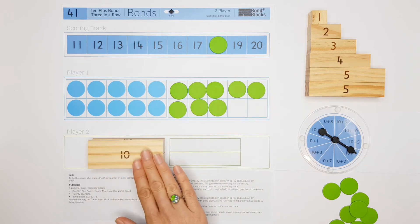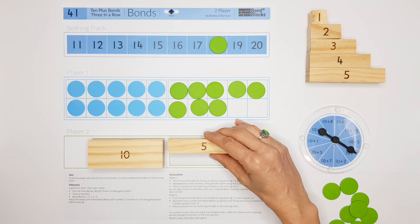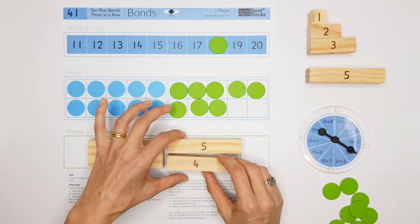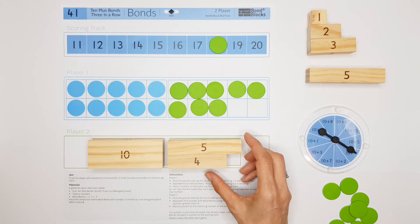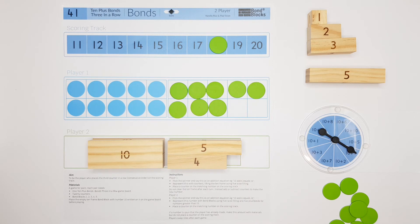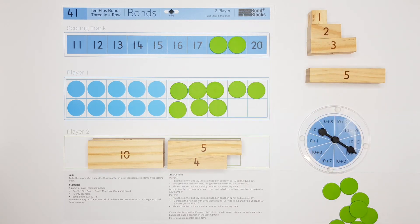To make 9, they would need five, and 9 is one less than 10, so I would need the four. Player 2 needs to say 10 add 9 equals 19, and they can place a counter.